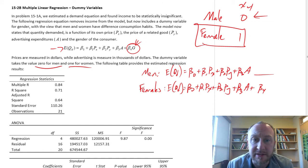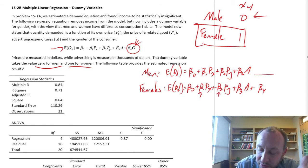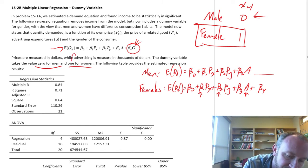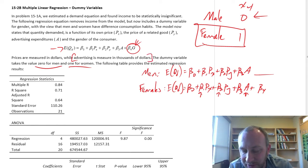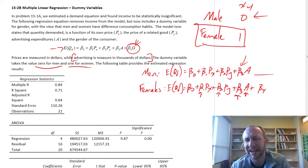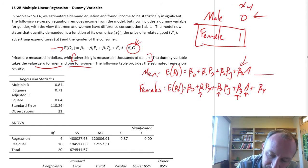All of these other variables—price, its own price, price of related good, and advertising expenditures—are all continuous variables. So these coefficients are interpreted as for each additional dollar or each additional thousand dollars we spend on advertising, this is the effect on quantity demanded. The impact of advertising expenditures on quantity demanded, in both cases, that's beta 3.